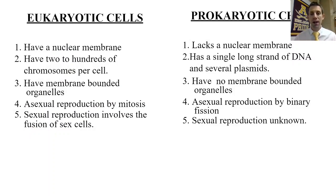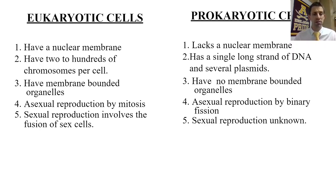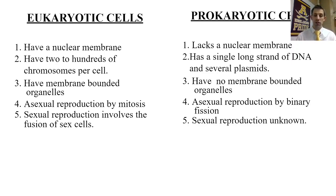Comparing the two: eukaryotic cells have a nucleus while prokaryotic cells do not — that's one defining feature. Their DNA is also arranged differently; eukaryotic cells have chromosomes (long strands of DNA), while prokaryotic cells typically have one circular piece of DNA or a single plasmid. Eukaryotic cells have organelles; prokaryotic cells don't. Eukaryotic cells reproduce by mitosis, prokaryotic cells by binary fission — an asexual cloning process. Eukaryotic organisms can also use sexual reproduction.